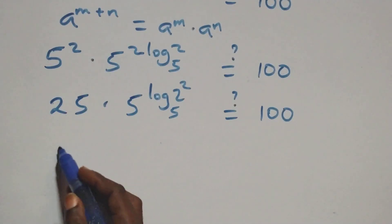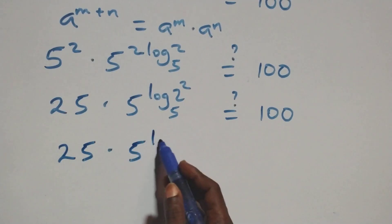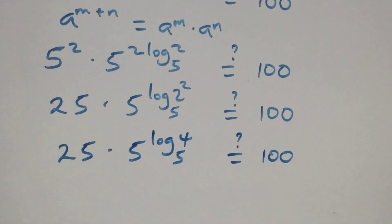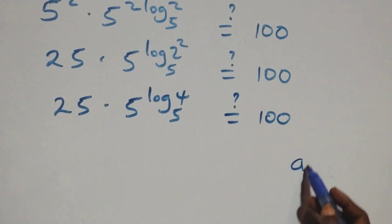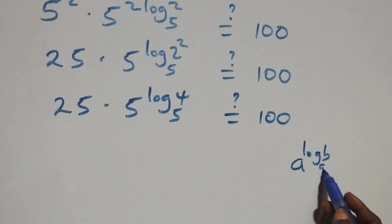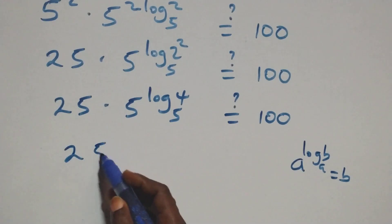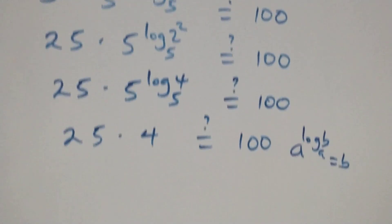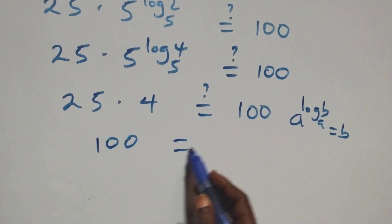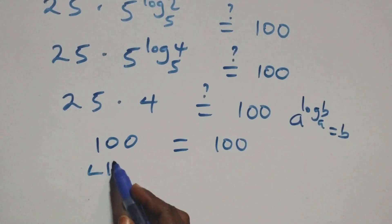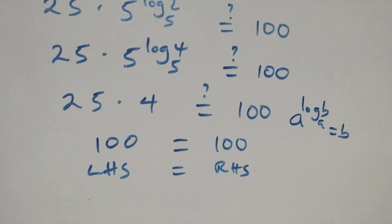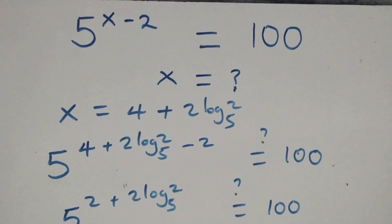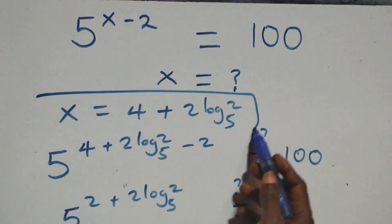We apply the rule: a raised to power log b base a equals b. So 5 raised to power log 4 base 5 equals 4. We have 25 times 4 equals 100. The left-hand side equals the right-hand side. Therefore, we conclude that x equals 4 plus 2 log 2 base 5 satisfies this given problem.